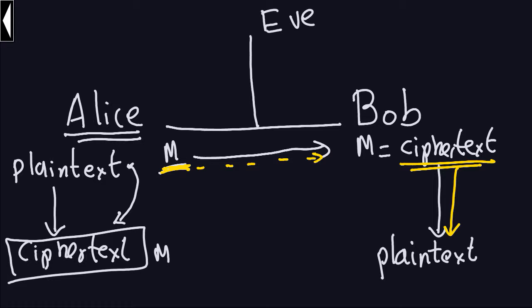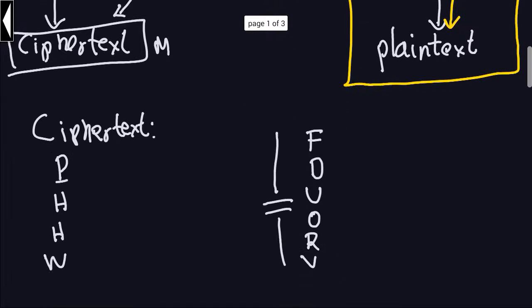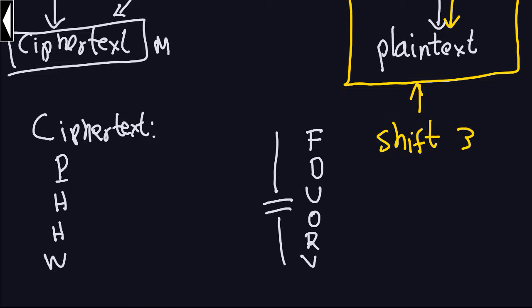Now on Bob's side: Bob already received the cipher text and has to translate it back into plain text. Because the cipher shifts three units to the right, Bob has to do the opposite — shift three units to the left. The cipher text he received is P H H W F O U O R V, and he has to shift three positions to the left.